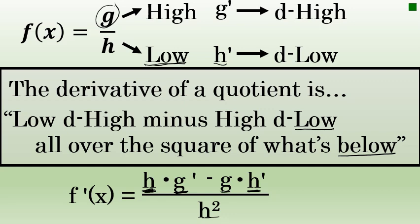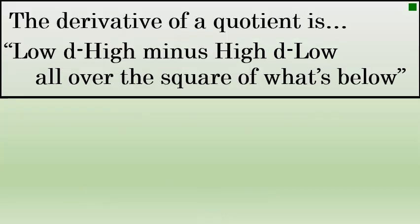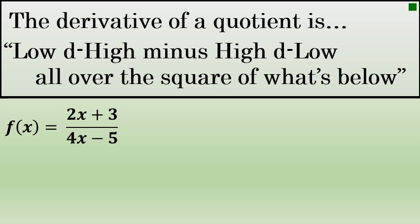Let's try an example using this rhyming shortcut. We'll find the derivative of f of x equals 2x plus 3 over 4x minus 5 using the quotient rule: low d high minus high d low, all over the square of what's below. The numerator is the high part and the denominator is the low part of the fraction.